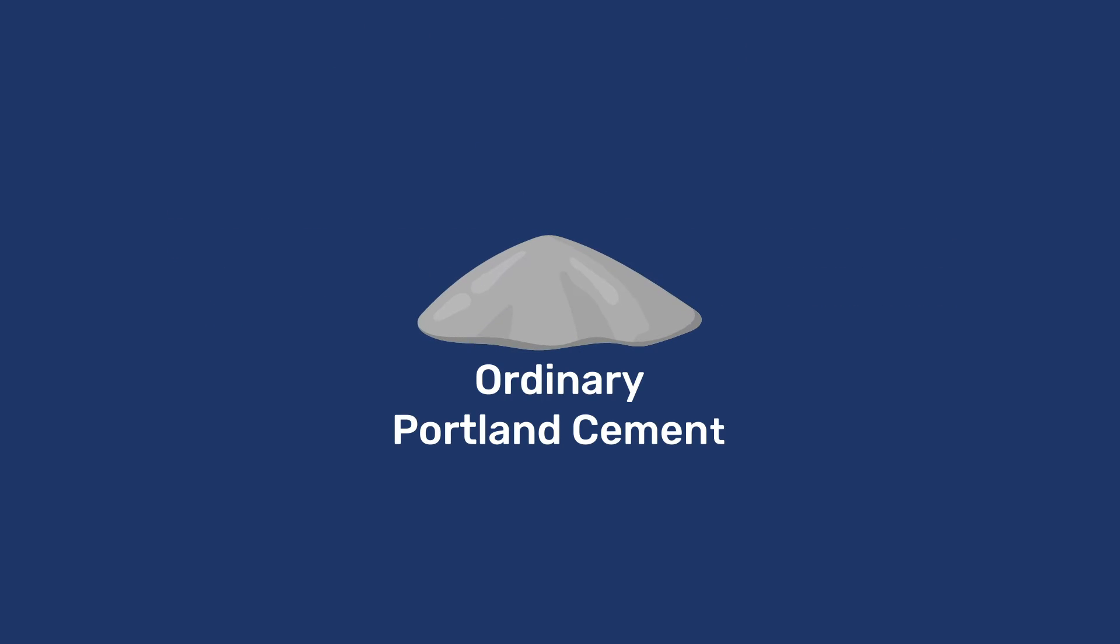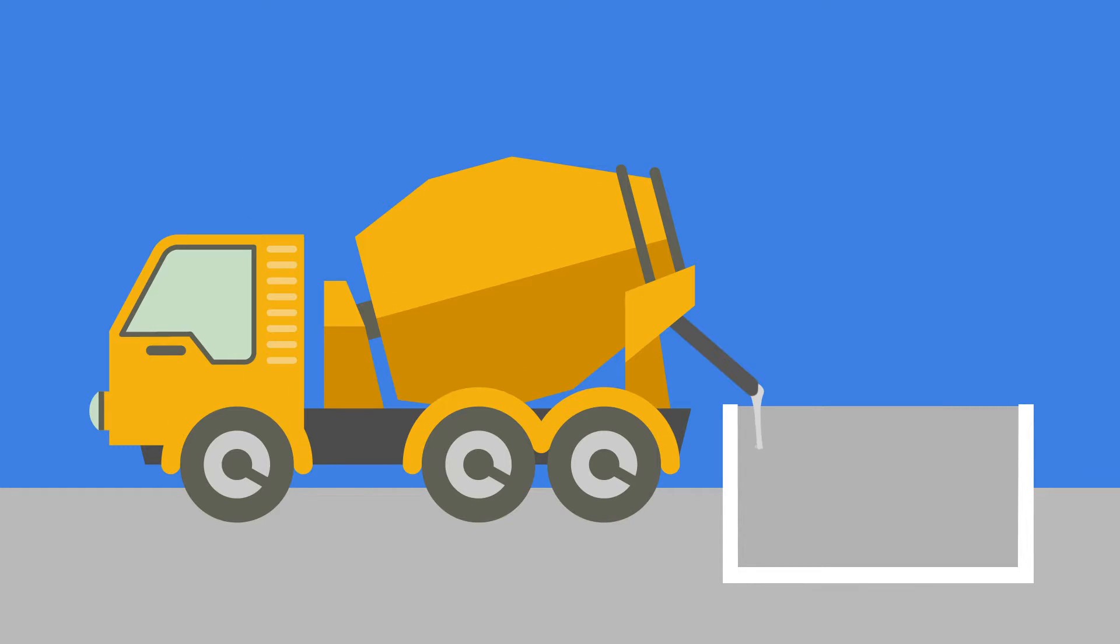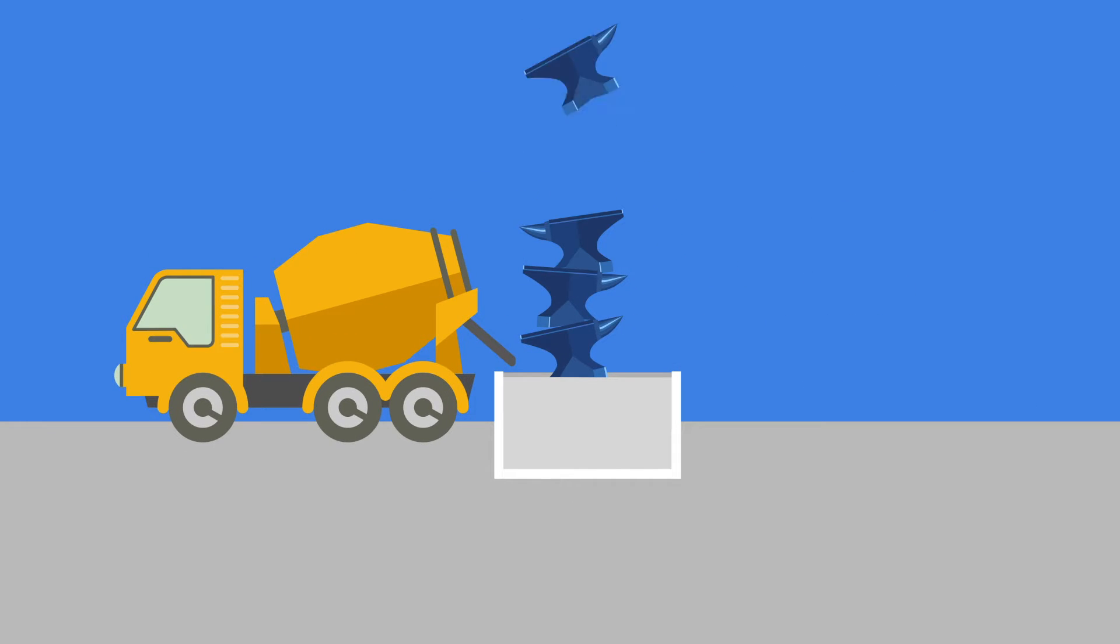In this video, we present the hydration of ordinary Portland cement that is often referred to as OPC. This process of hydration turns concrete from a fluid or plastic material that can be easily shaped into a solid and very strong material that can bear significant loads.